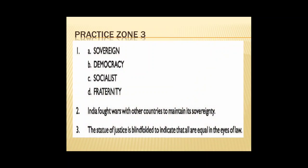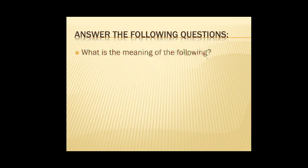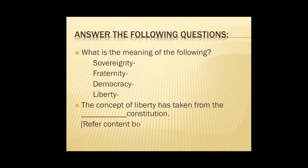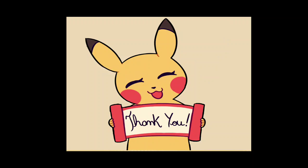Now let's look at some practice questions. First, unscramble the following words: sovereign, democracy, socialist, fraternity. Second, why did India fight wars with other countries? India fought wars with other countries to maintain its sovereignty, its supreme power. Third, why is the statue of justice blindfolded? The statue of justice is blindfolded to indicate that all are equal in the eyes of the law. Based on this video, write the meanings of sovereignty, fraternity, and democracy, as well as liberty. Also complete: 'The concept of liberty was taken from the blank Constitution' — refer to page 130 for the answer. Thanks for watching the video, keep watching!